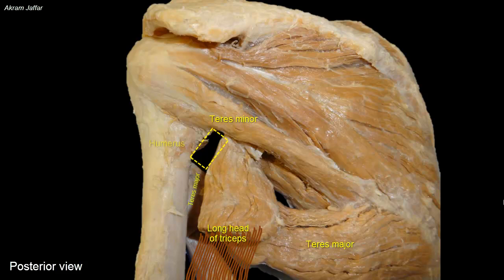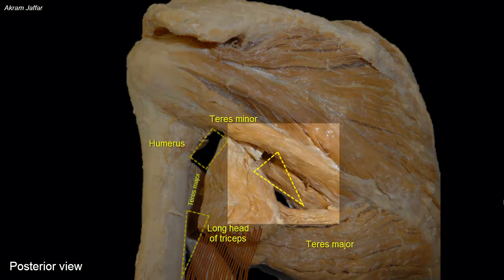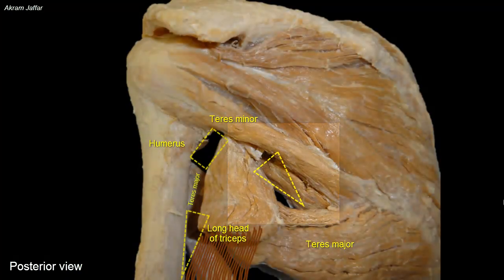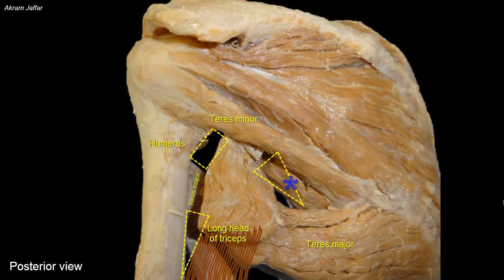The two triangular spaces have the same boundaries whether seen from anteriorly or posteriorly. We can see clearly that the medial triangular space is bounded by teres minor muscle. Subscapularis is a little bulky and can be seen here as well, overlapped by teres minor, but the boundary of the triangle is teres minor and not subscapularis.